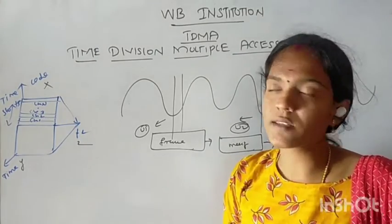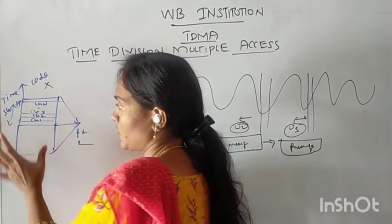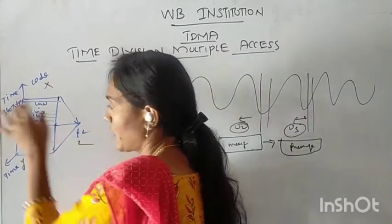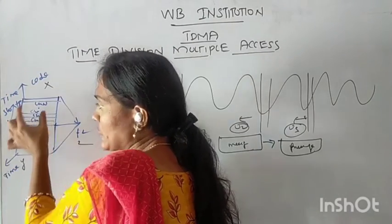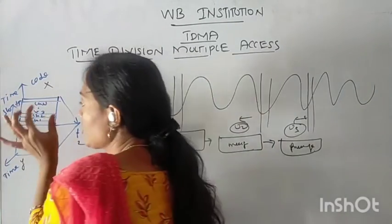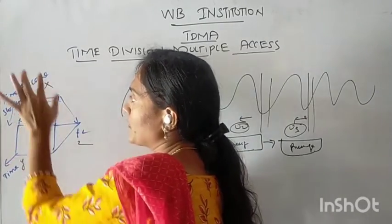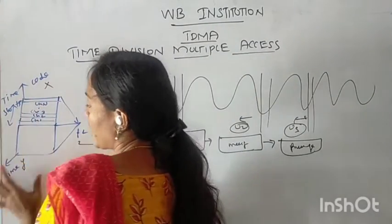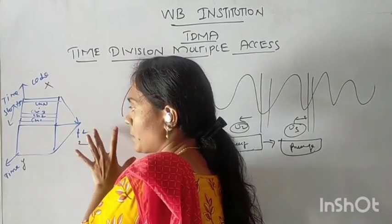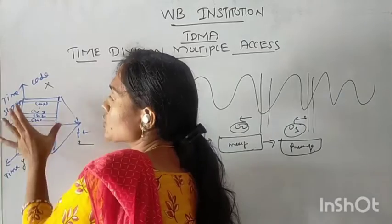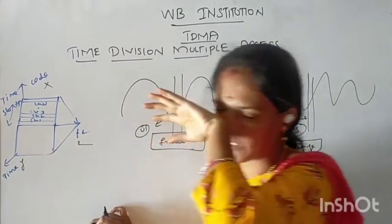That is the TDMA process. This is the representation of TDMA. Time slots are divided — channel 1, channel 2, channel 3, which are divided. The X and Y axis: Y is time, and the same frequency. In the TDMA process, time slots are divided — channel 1, channel 2, channel 3.